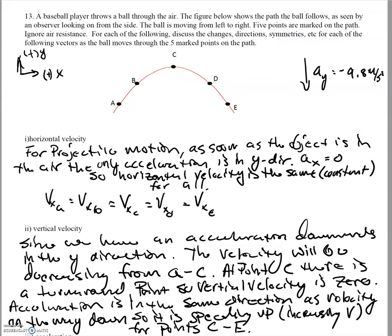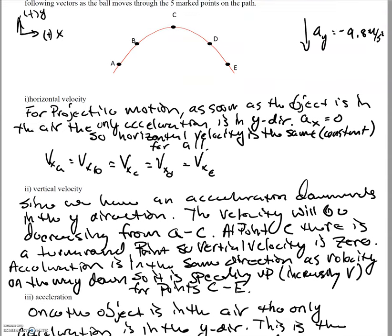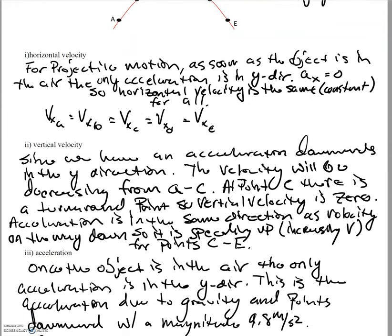Continuing on, we have problem 13. A baseball player throws a ball through the air. The figure below shows the path that the ball follows. The ball is moving from left to right and we're given these five points. We are asked to comment about each of those points and the intervals between them for three things: horizontal velocity, vertical velocity, and acceleration.